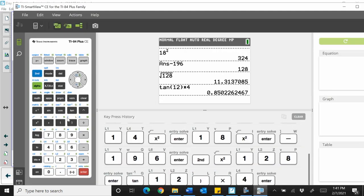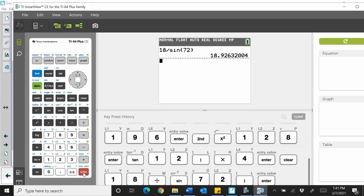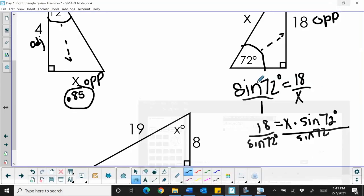Let's grab this and take 18 divided by sine of 72. And that will give us 18.9. And that is what the hypotenuse is.